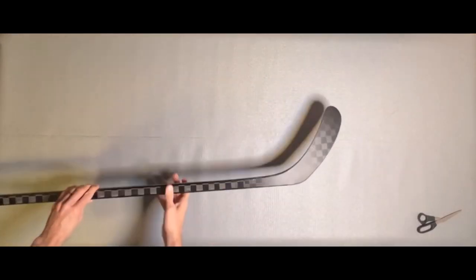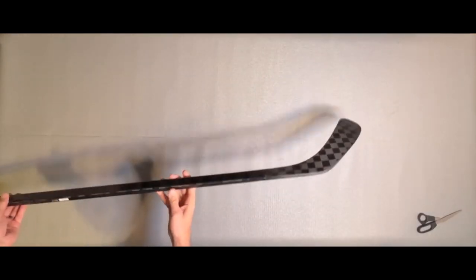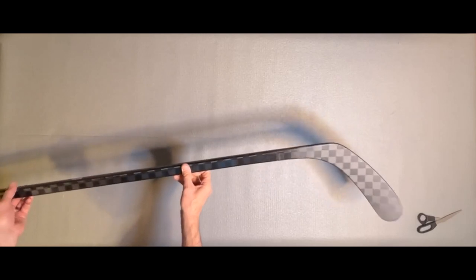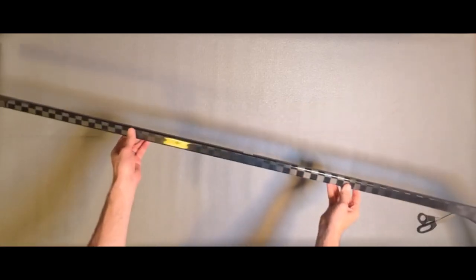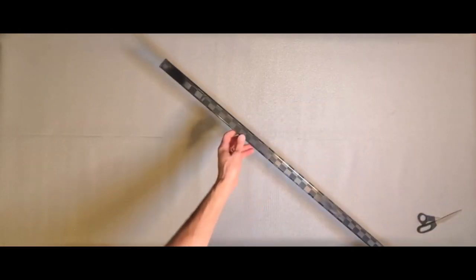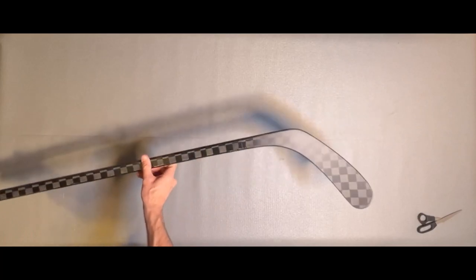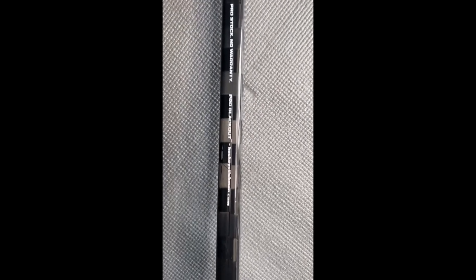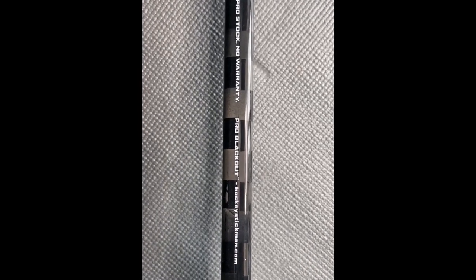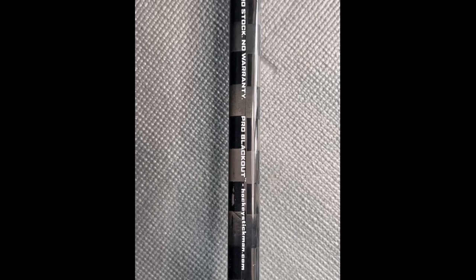These Pro Blackouts have a black and gray checkerboard pattern on them. I think it looks pretty cool. There are a few markings on the stick. The blade pattern P92 and stick flex of 95 on one end, and on the other side, HockeyStickMan.com, and an indication of no warranty. I'll mention something about the warranty in a bit. Let's get this bad boy taped up and ready for action.